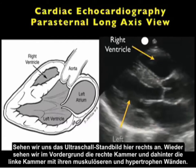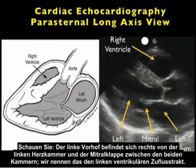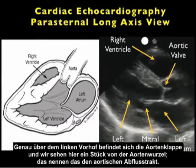Looking at the ultrasound still image, we again see the superficial right ventricle. Posterior, we see the left ventricle with its more muscular and hypertrophic walls. The left atrium is seen to the right of the left ventricle, with the mitral valve in between the two chambers — we categorize this as the left ventricular inflow tract. Note the aortic valve sitting right above the left atrium, and a little bit of the aortic root — this is what we categorize as the aortic outflow tract.